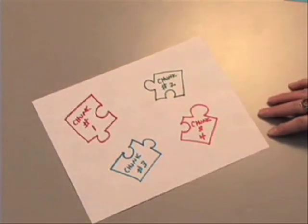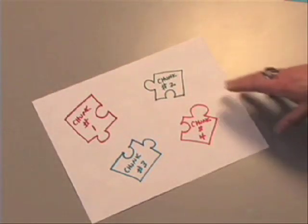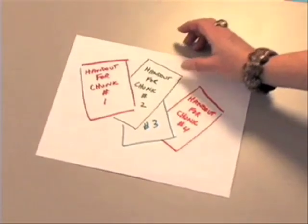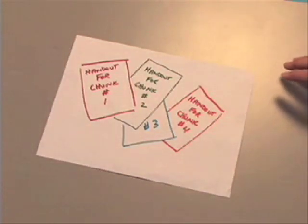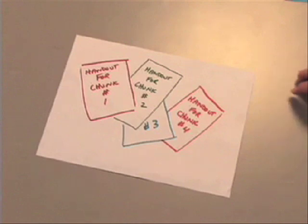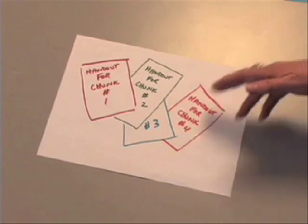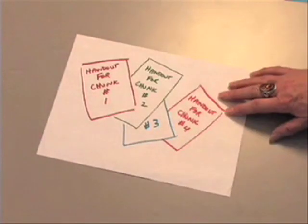Learning jigsaws work best with content that is easily divided into a fairly small number of chunks or steps, let's say four pieces for our example. It's also important to provide good handouts for each piece of content so that all students have a backup resource just in case their student teacher makes some mistakes or misses a bit. Have enough handouts available for everyone in the class.